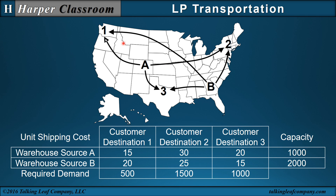They're shipping to three customer sites — 1, 2, and 3 — Seattle, Washington; Albany, New York; and Dallas, Texas. Each of these three sites has a required demand: 500, 1,500, and 1,000.